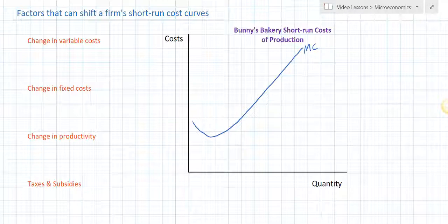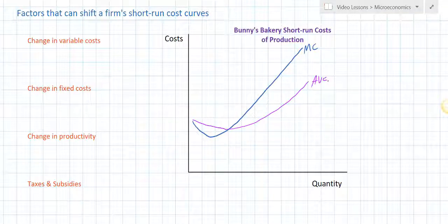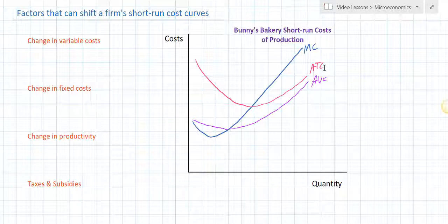The next line I'm going to draw is my average variable cost curve. This represents the per unit labor cost basically, and it slopes downward until it crosses marginal cost and then it's pulled upwards due to the decreasing productivity of additional units of the variable resource. Finally, I'm going to draw my average total cost curve, which slopes downwards until it crosses marginal cost and then slopes upwards again because the cost of additional units is rising. It is pulled closer and closer to AVC because at any given level of output, the distance between the ATC and the AFC represents the average fixed cost — in other words, the firm's total fixed cost divided by the quantity of output at a particular level of output.